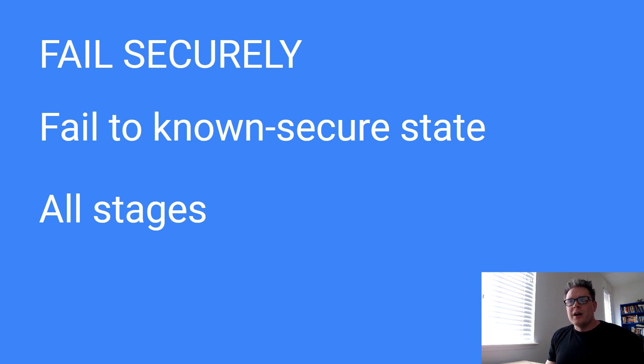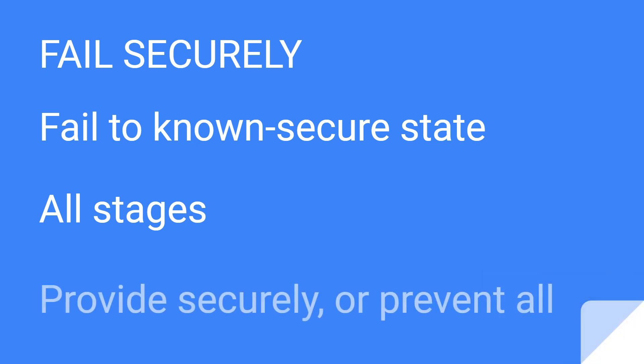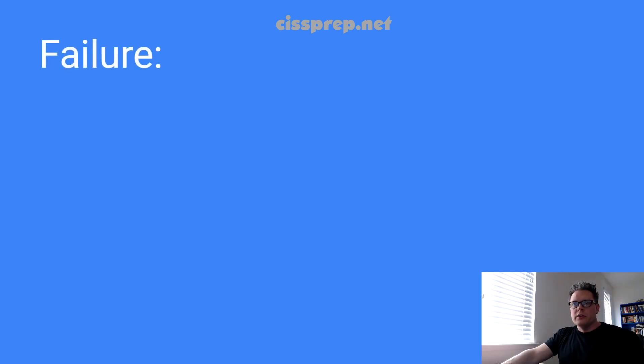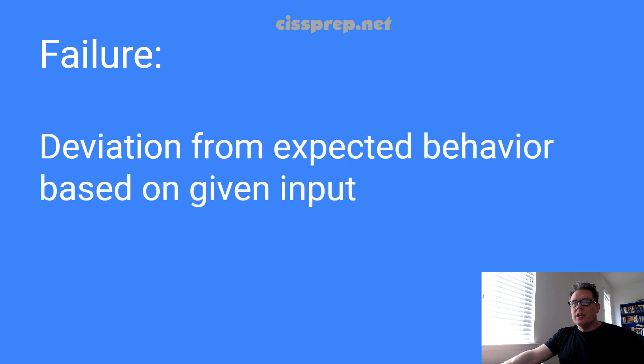If a system has successfully implemented this, it should be able to provide degraded or alternative functionality in a secure fashion, or basically prevent the system from functioning at all in an insecure state. The term failure might be presented on your exam with this type of wording: a deviation from an expected behavior based on a documented or given input.